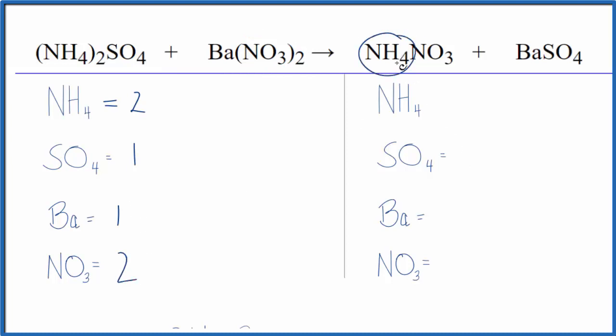Product side, we have one ammonium ion, one sulfate, one barium, and one nitrate. So you can see this is a lot simpler than counting up all the hydrogens and oxygens here.